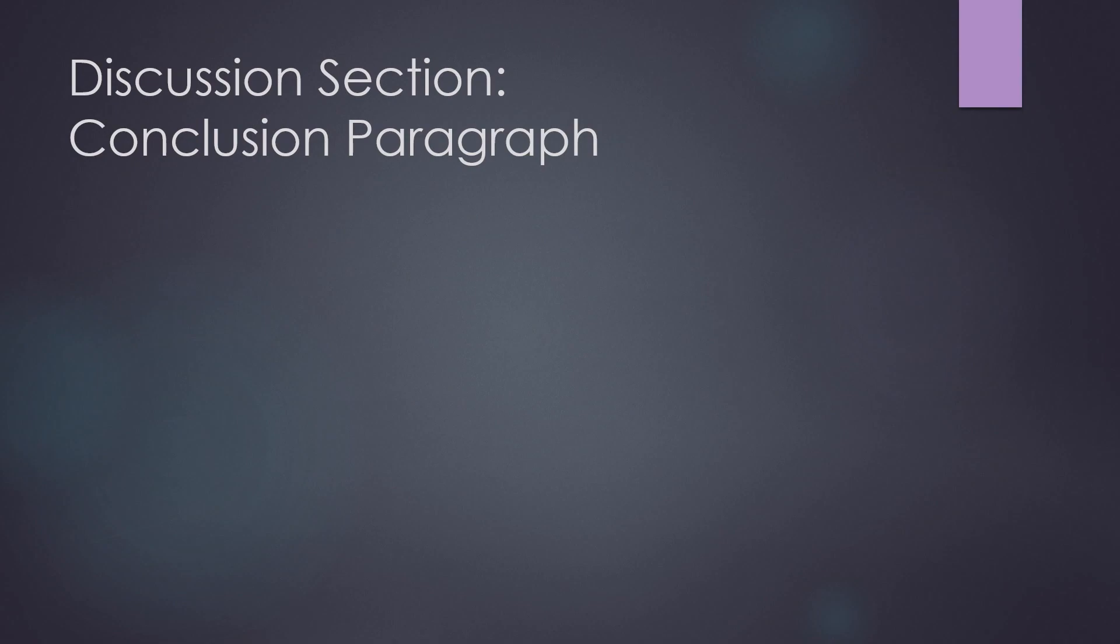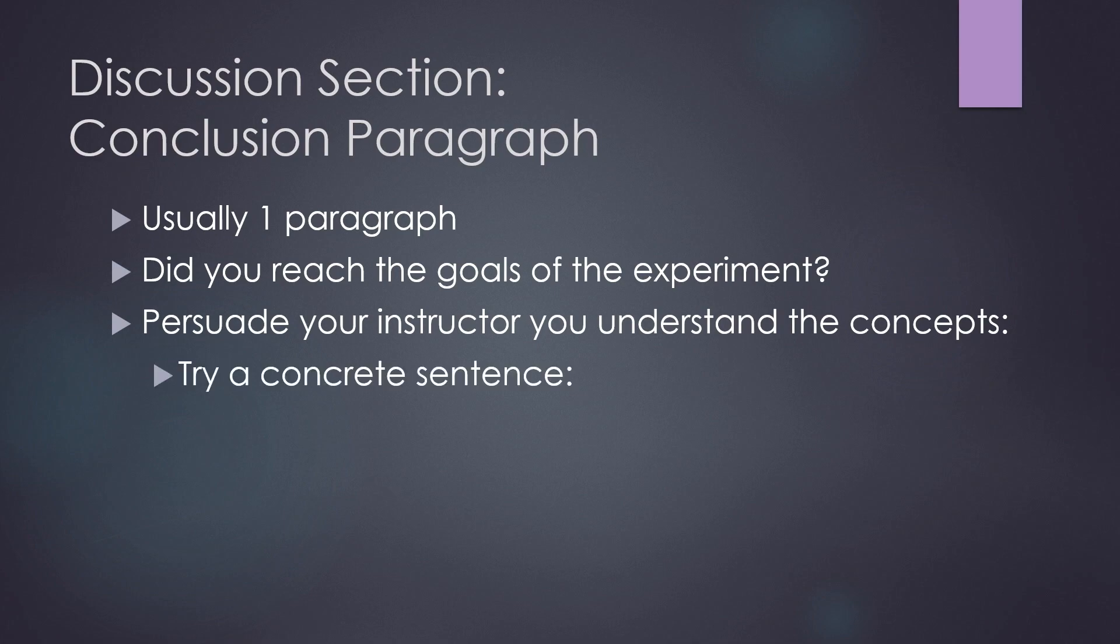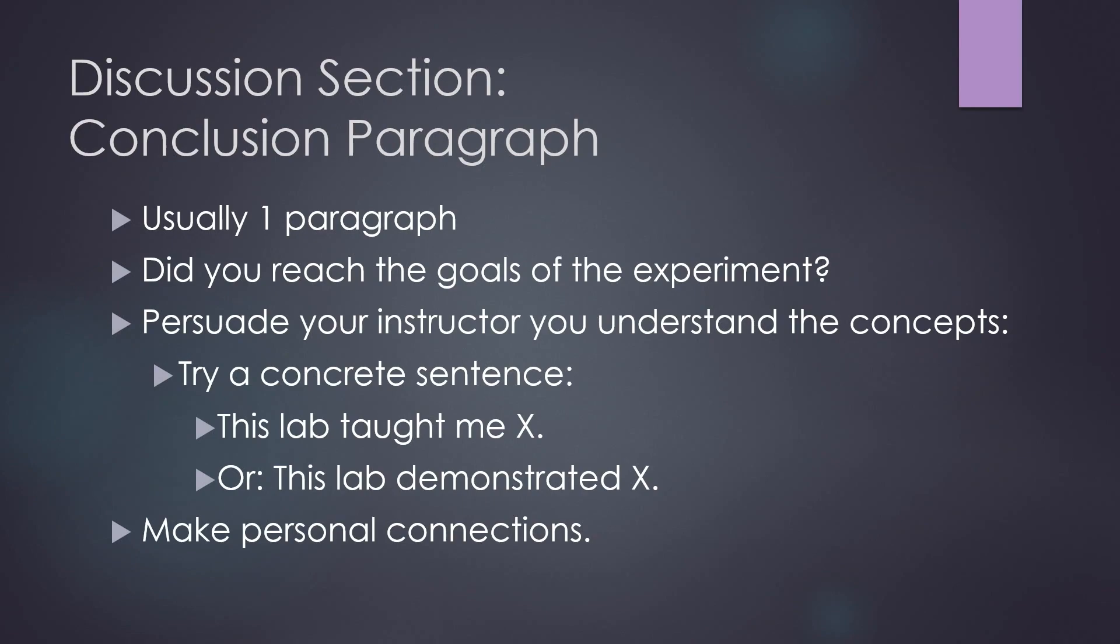We've made it to the conclusion paragraph in your discussion section. This is usually just one paragraph. It should be a summary of the goals of the experiment and whether you reached those goals. This is your chance to really show your instructor that you understood and learned something from the lab. You might try a concrete sentence that goes something like this, this lab taught me X or this lab demonstrated X. Then you want to prove it by making a connection to the experiment that is personal to you, to your life, to another class you are taking, to something that you thought about that might be original just to yourself.